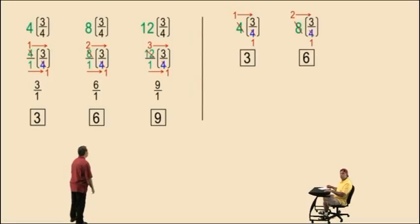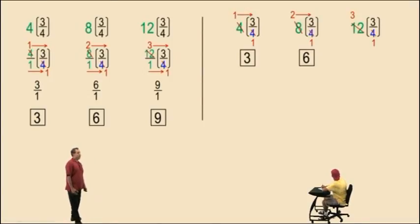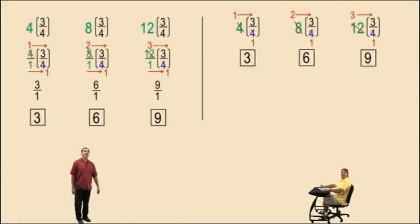Let's do another one: twelve times three-fourths. Here, twelve divided by four is three — reduces to three over one. And three times three is what, Charlie? Nine. Very nice there, Charlie. Your answer is nine.